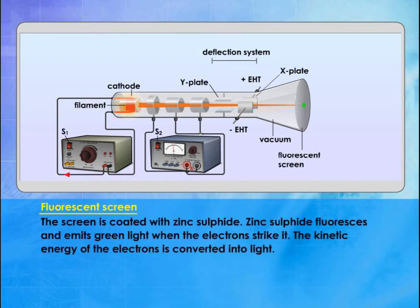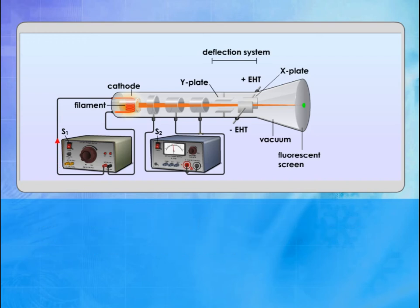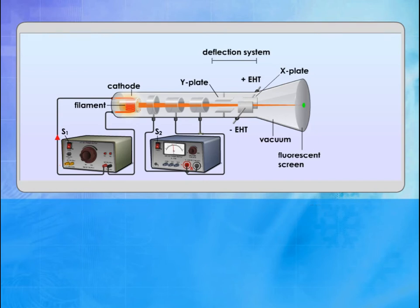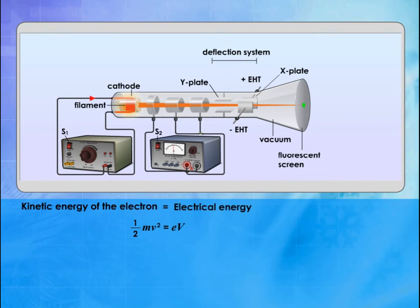The screen is coated with zinc sulphide. Zinc sulphide fluoresces and emits green light when the electrons strike it. The kinetic energy of the electrons is converted into light. The kinetic energy of the electrons is equal to the electrical energy supplied by the power supply across the cathode and anode. Thus, the kinetic energy of the electron, ½mv², is equal to the electrical energy, eV. The speed of the electron is the square root of 2eV divided by m.